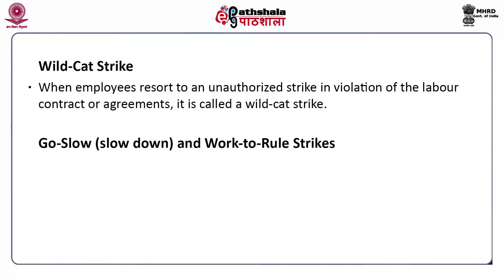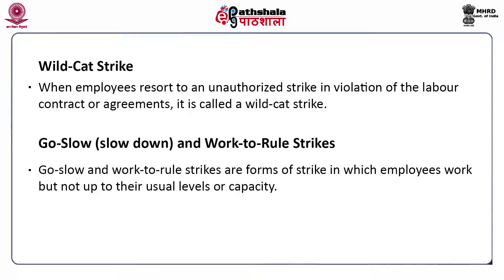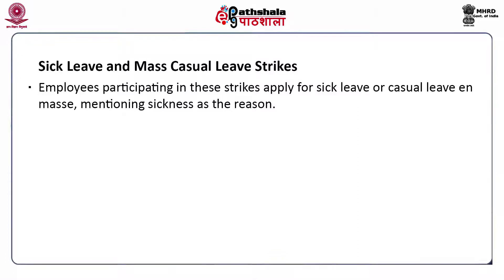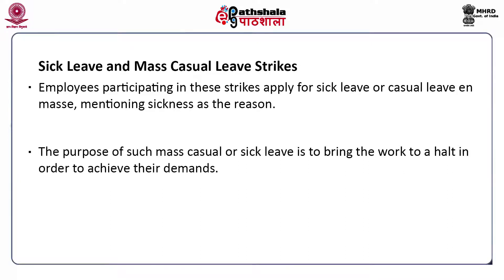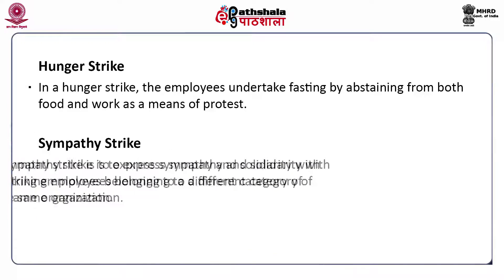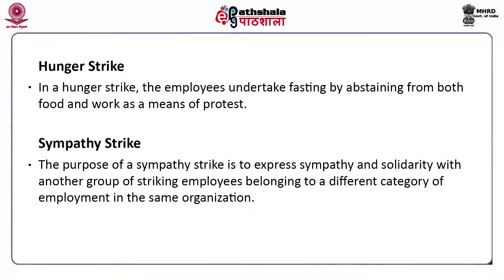Go-slow and work-to-rule strikes are forms of strike in which employees work but not up to their usual levels or capacity. In sick leave and mass casual leave strikes, employees apply for sick leave or mass casual leave citing sickness, with the purpose of bringing work to a halt to achieve their demands. In a hunger strike, employees undertake fasting by abstaining from both food and work as a means of protest. A sympathy strike is to express sympathy and solidarity with another group of striking employees belonging to a different category of employment in the same organization.